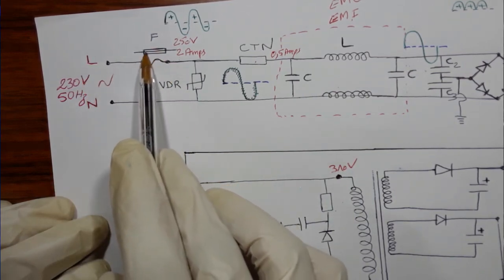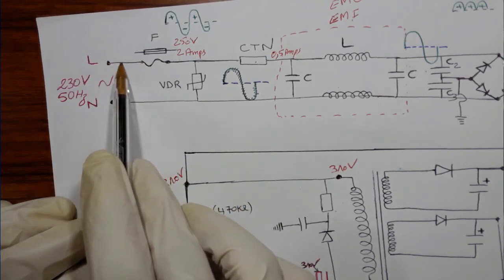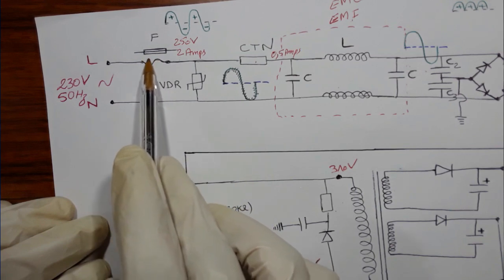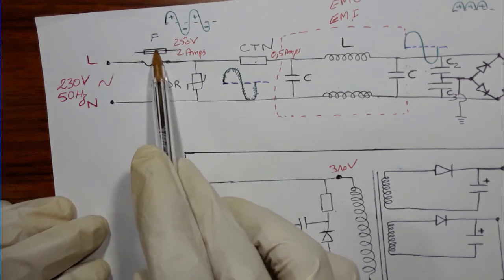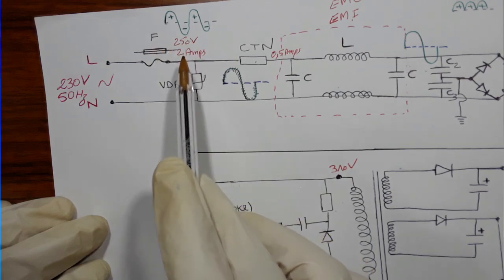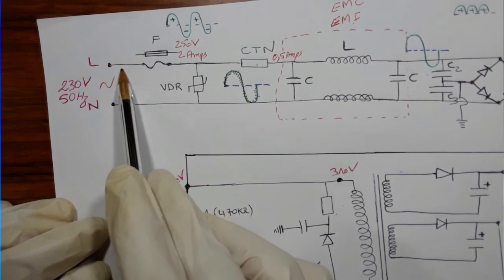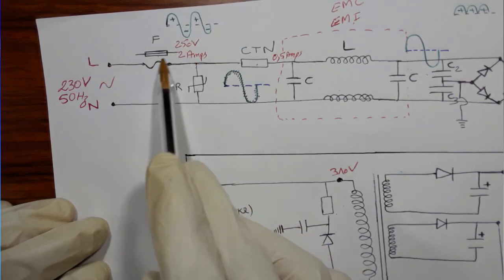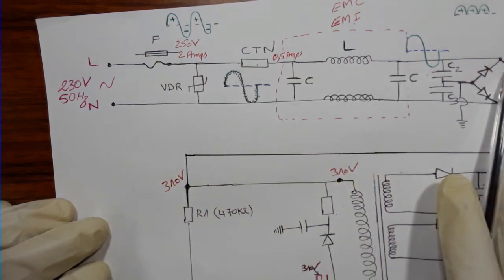The power or voltage will pass through this fuse, which is for protection. For example, if this fuse has characteristics of 250 volts and 2 amps, and the voltage or current exceeds these values, the fuse will blow out and protect the other circuits.